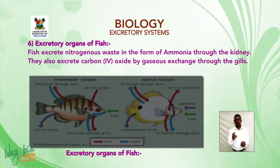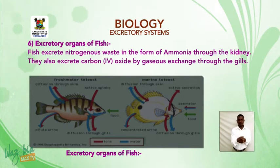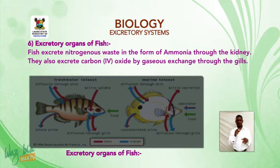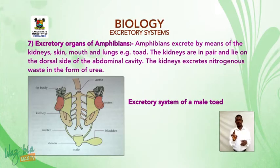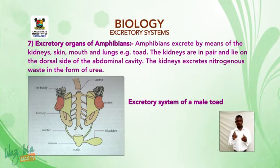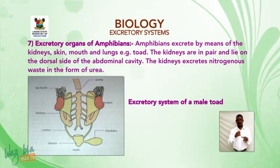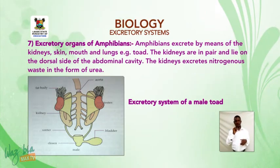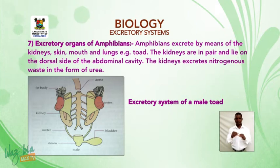Fish excrete nitrogenous waste in the form of ammonia through the kidney, and also excrete carbon dioxide by gaseous exchange through the gills. Amphibians excrete by means of the kidney, skin, mouth, and lungs — for example, the toad. The kidneys are paired and lie on the dorsal side of the abdominal cavity and excrete nitrogenous waste in the form of urea.